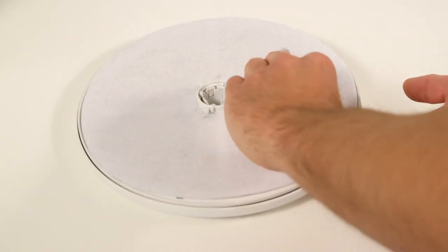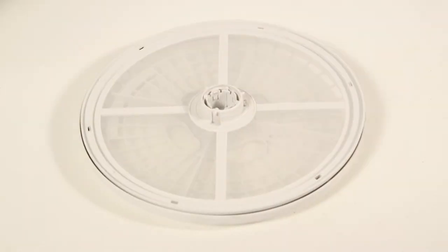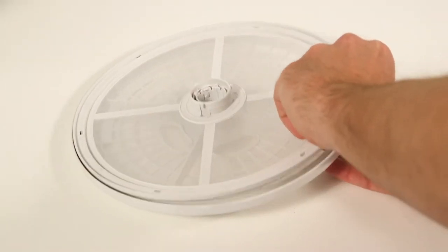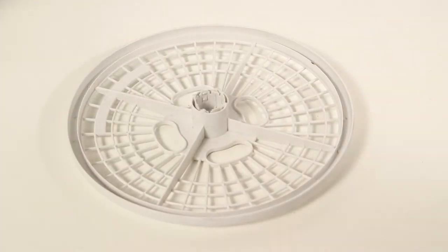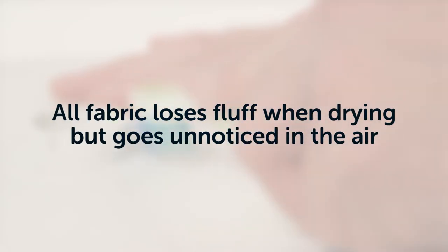Next, lift away the exhaust filter. Then lift away the lint filter. Do not be alarmed by the amount of fluff in the filter. All fabric loses fluff when drying, but it goes unnoticed in the air.